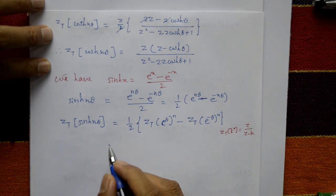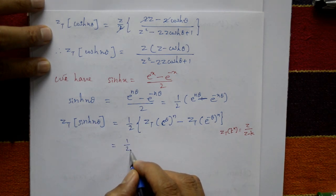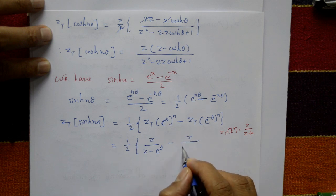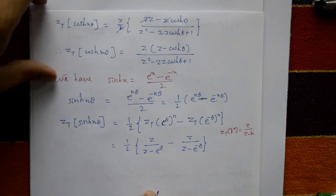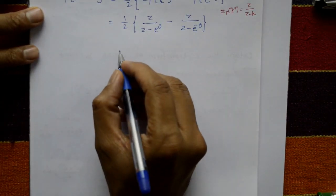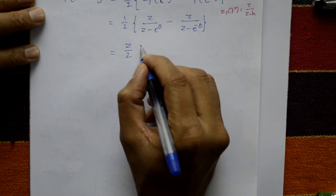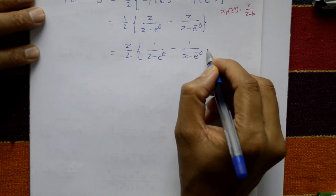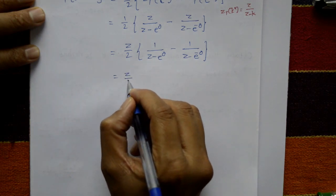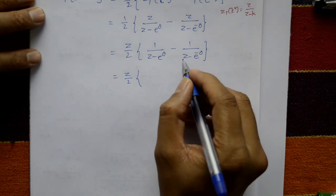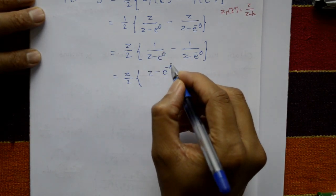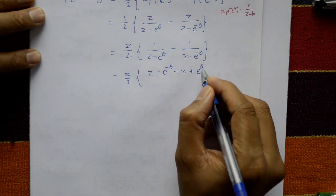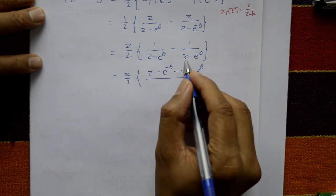Using Z{k^n} = Z/(Z - k), this becomes (1/2)[Z/(Z - e^θ) - Z/(Z - e^(-θ))]. Taking Z common: Z/2 times [1/(Z - e^θ) - 1/(Z - e^(-θ))]. Cross-multiplying, the numerator becomes (Z - e^(-θ)) - (Z - e^θ).